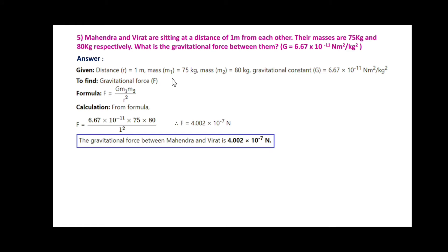Mahendra and Virat are sitting at a distance of 1 meter from each other. Their masses are 75 kg and 80 kg respectively. What is the gravitational force between them? G = 6.67×10⁻¹¹ N·m²/kg². Here distance r = 1 m, mass m1 = 75 kg, m2 = 80 kg. We have to find the gravitational force. Formula is F = G·m1·m2/r².